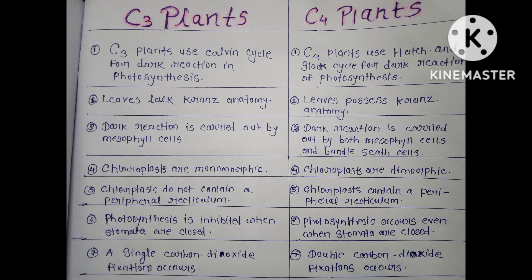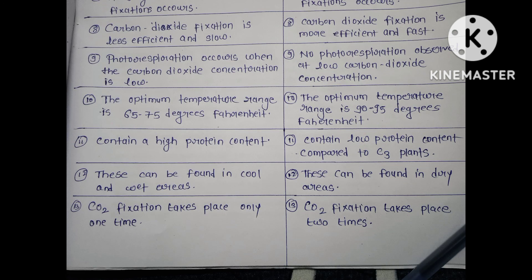In C3 plants, a single carbon dioxide fixation occurs, whereas in C4 plants, double carbon dioxide fixation occurs. In C3 plants, carbon dioxide fixation is less efficient and slow, whereas in C4 plants, carbon dioxide fixation is more efficient and fast.